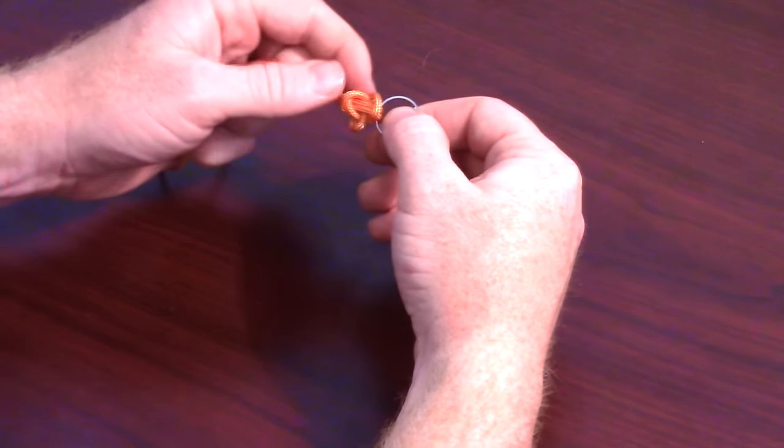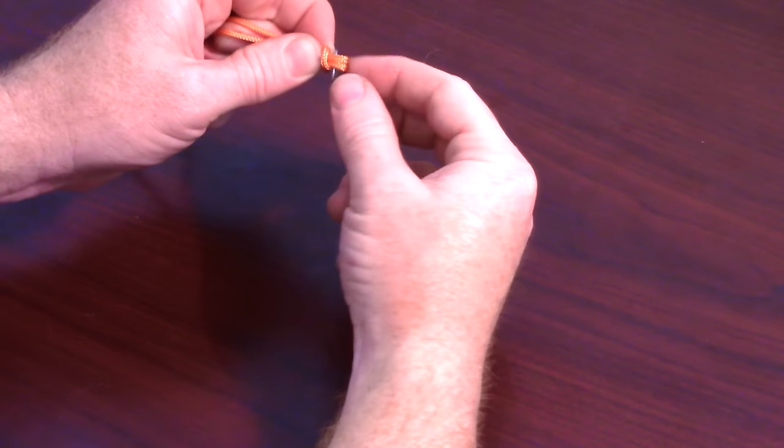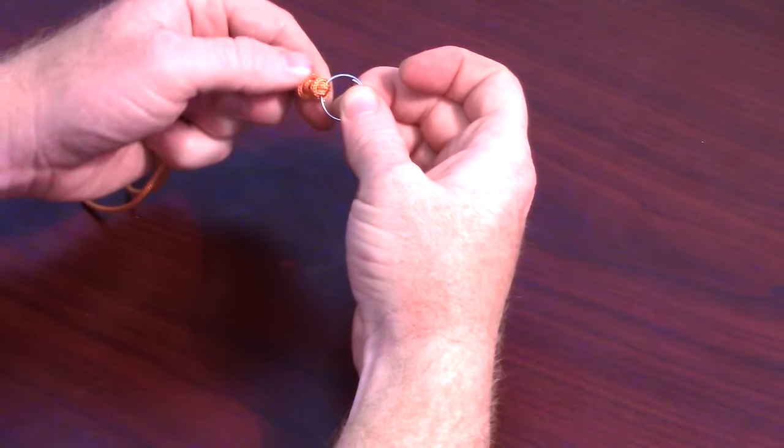I am using paracord here, so it's tough to tighten, but this will be much easier with smooth fishing line. Make sure the two loops over the hook eye are not twisted, as this could cause a weak point.